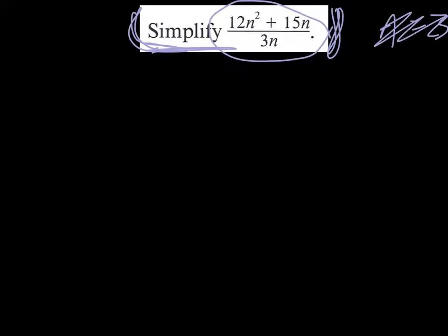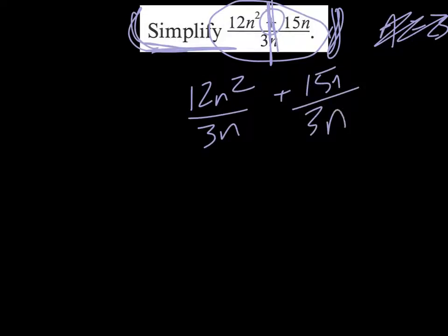What you want to do is essentially you're going to split this problem. So you're going to do 12n² over 3n plus 15n over 3n. Now, some people just like to circle this and do that, and then circle this and do that. That's fine. Whatever your heart desires.